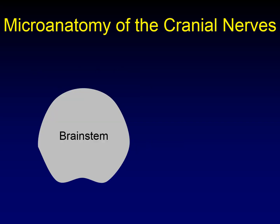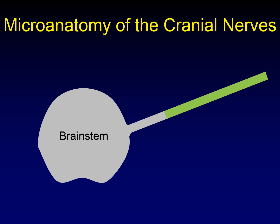This is an image of an arbitrary part of the brain stem — it doesn't matter what part we're looking at — and this is an arbitrary cranial nerve coming off of that brain stem. The green area is a portion of the cranial nerve that has myelin created by Schwann cells, and the gray part has myelin created by oligodendrocytes.